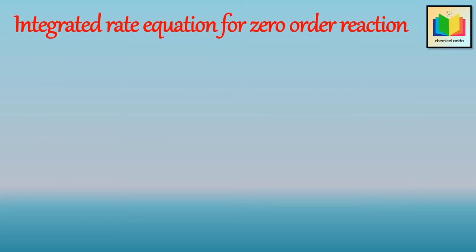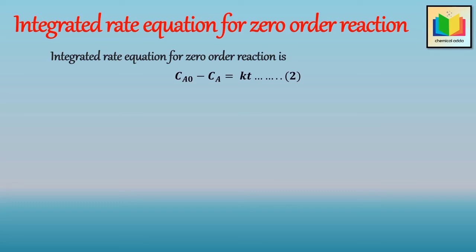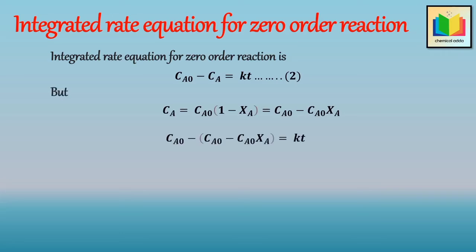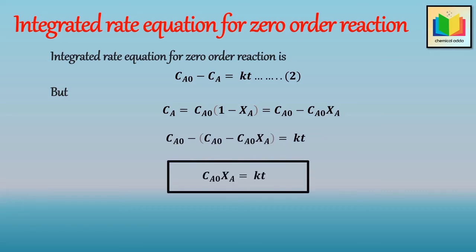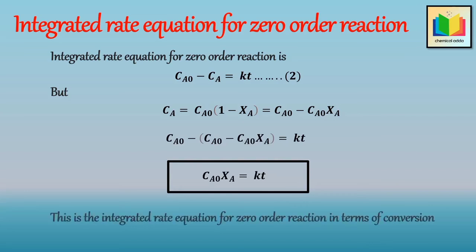Now let's derive the integrated rate equation for zero order reaction in terms of conversion. We know the integrated rate equation in terms of concentration is C_A0 minus C_A equals k t. Since C_A equals C_A0 into one minus x_A, which can also be written as C_A0 minus C_A0 x_A, substituting the value of C_A into equation 2 and rearranging, we get C_A0 into x_A is equal to k t. This is the integrated rate equation for zero order reaction in terms of conversion.